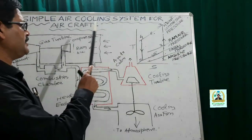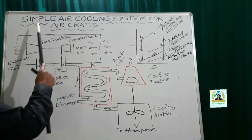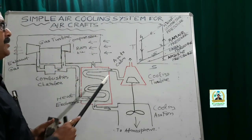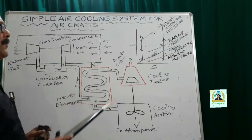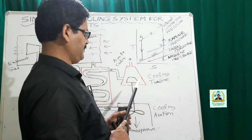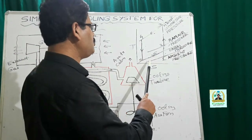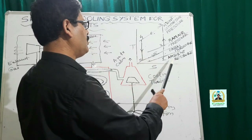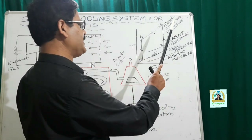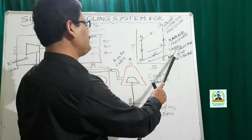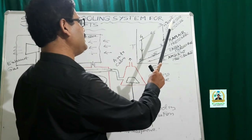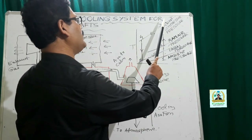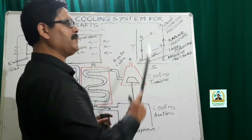Now we'll discuss the operation of the simple air cooling system with the help of the T-S diagram. There are four pressure lines: the first is the ambient pressure line, the second is the cabin pressure line, the third is the ram air pressure line, and the fourth is the ram compression pressure line.